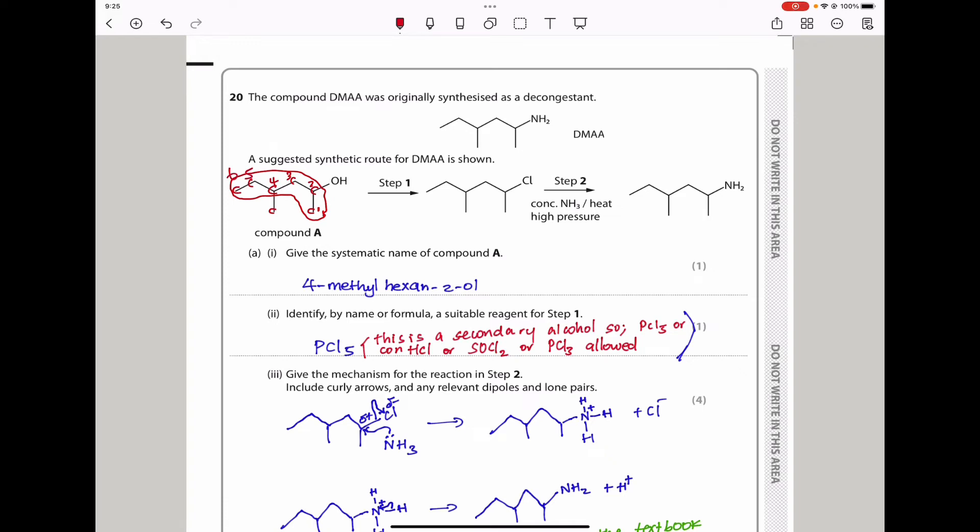Because there are six carbons, it's going to be hexanol, but because OH is on carbon number 2, it's hexan-2-ol. We have a side chain which is a methyl on carbon 4, so the name comes out to be 4-methylhexan-2-ol.